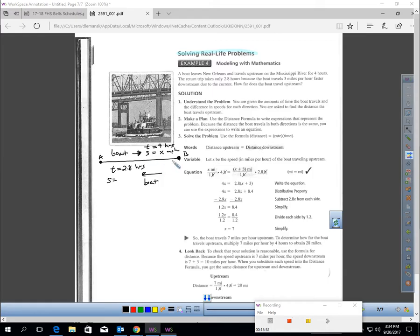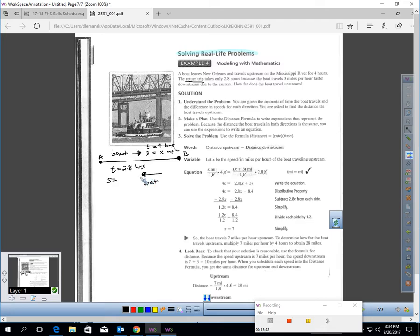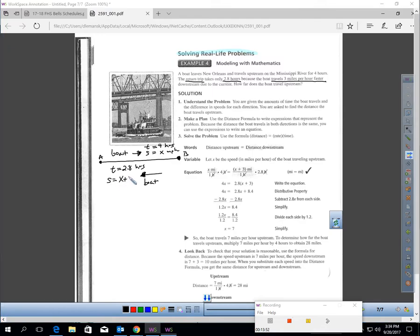The boat turns around. There's a return trip. It turns around, and now it's going in the opposite direction. You notice the time. It took less time because it's going with the water. We don't know how fast the boat was traveling, but it said it traveled 3 miles per hour faster. If the speed there was X, and on the way back it's 3 miles per hour faster, that means this has to be X plus 3.